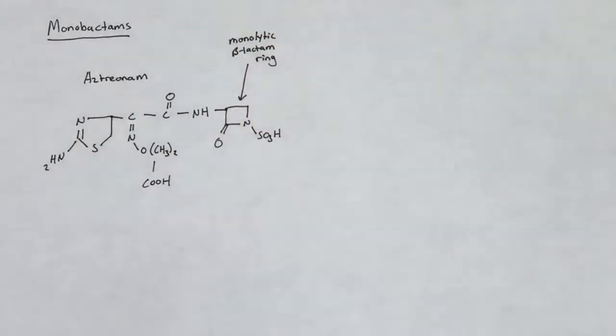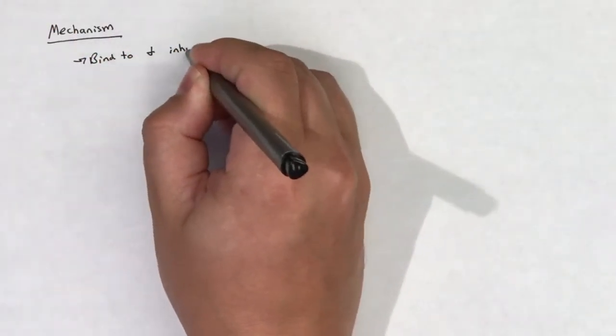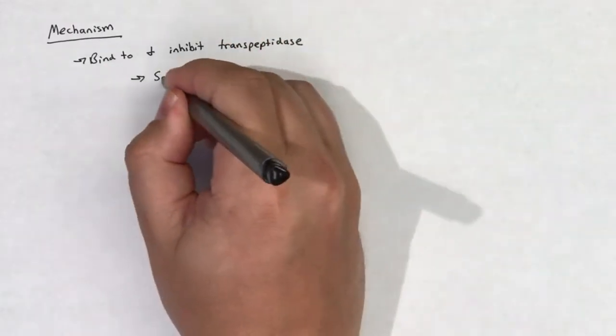There is one monobactam available in the U.S., and its name is aztreonam. Aztreonam works like all other beta-lactams, including penicillins and cephalosporins.